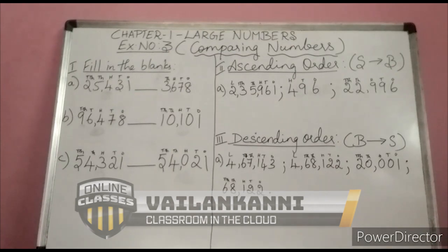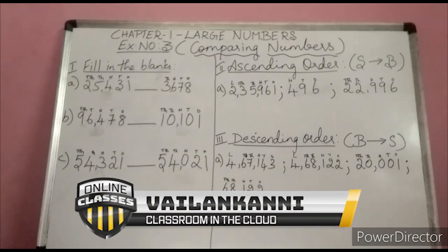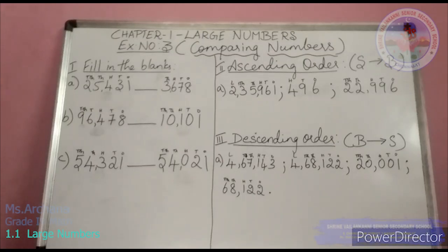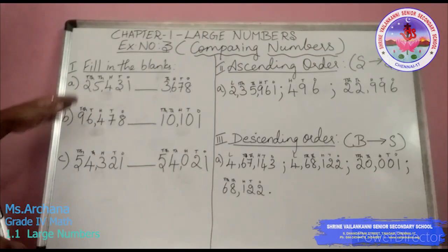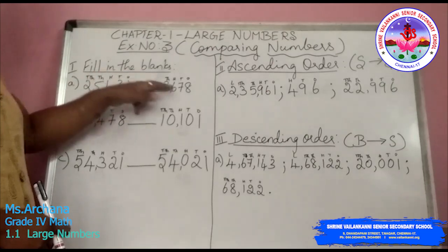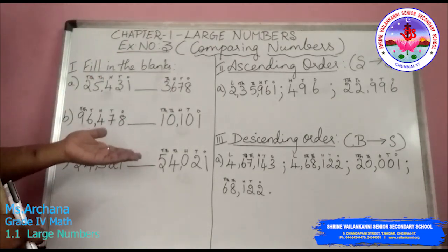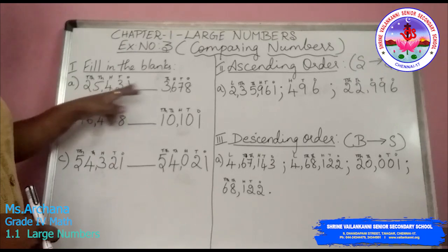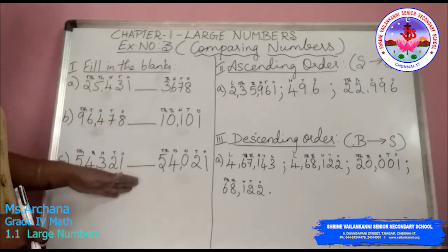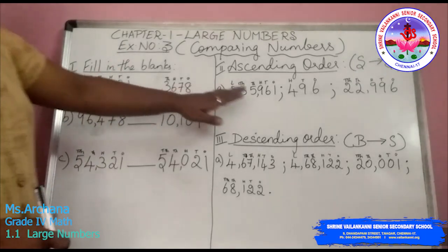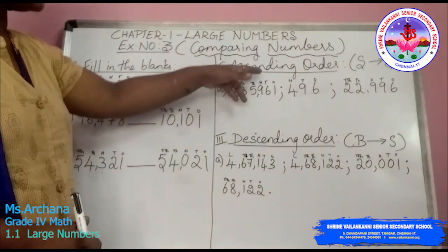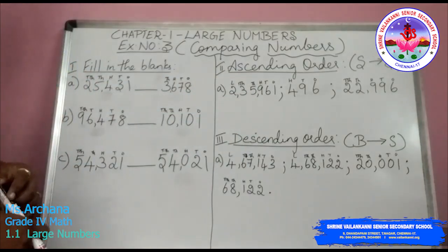Hi children, we are going to continue our class with exercise 3 in chapter 1 which will be comparing the numbers. We are going to see how to compare 2 sets of numbers and more than 2 sets of numbers, in ascending order and descending order.